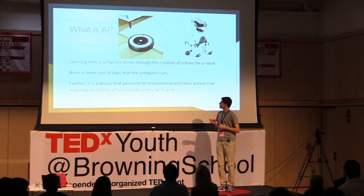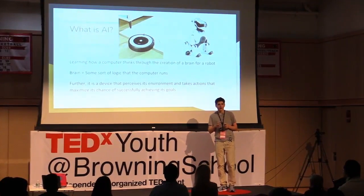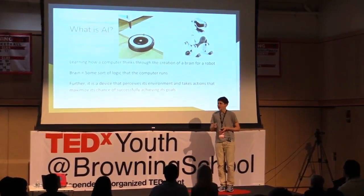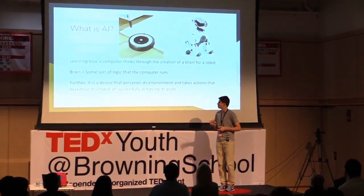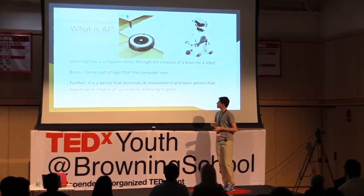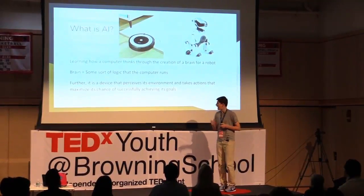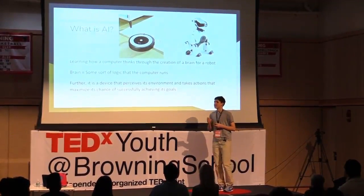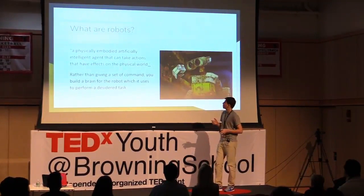Basically, you're building a brain for a robot rather than telling it to move forward or turn right. You're saying, react in this way to its environment. So it's essentially how you create a robot that's going to react to its environment and try to most accurately achieve its goal.